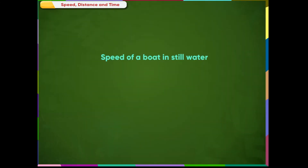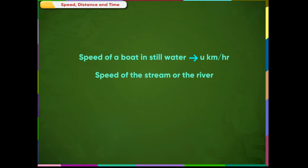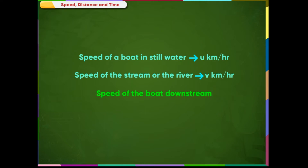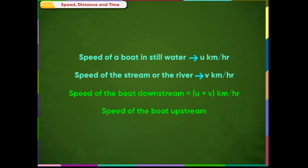If the speed of the boat in still water is U kilometer per hour and the speed of the stream or the river is V kilometer per hour, then the speed of the boat downstream is equal to U plus V kilometer per hour. The speed of the boat upstream is equal to U minus V kilometer per hour.